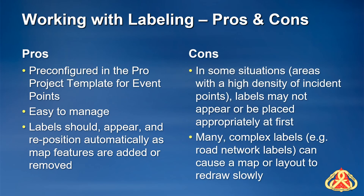In certain situations, labels may not appear or may never be placed appropriately. This typically happens in areas where there are clusters of features that require labels. Labeling features in these situations may require a different approach, such as forcing labels to draw or using annotation.